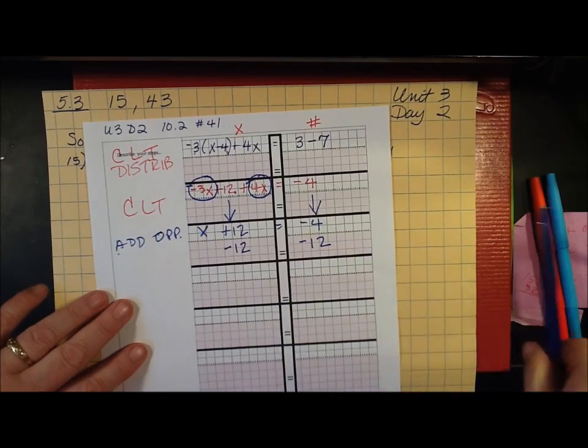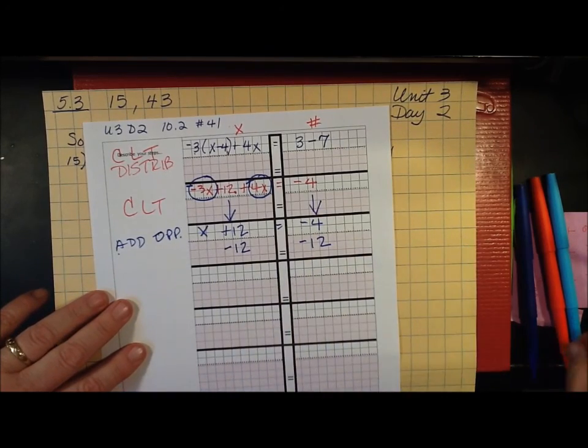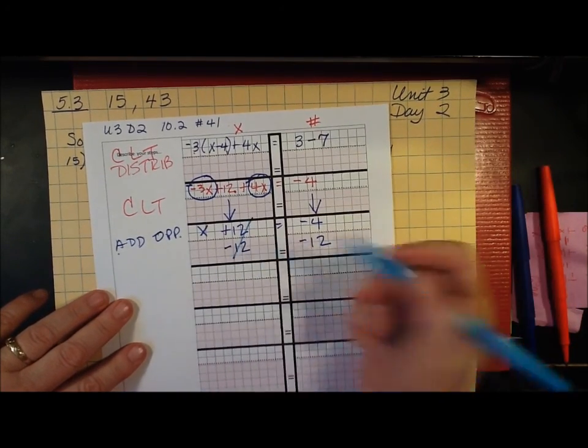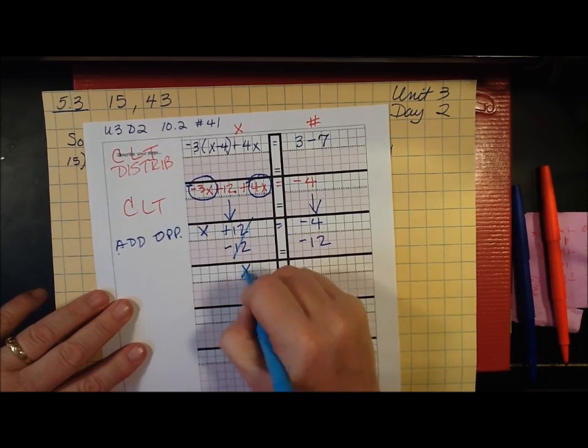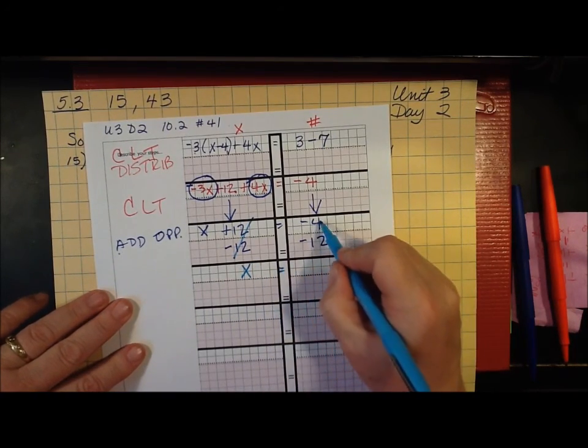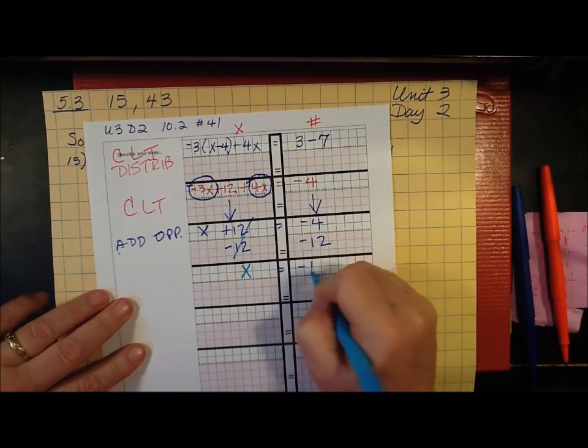And again, that's my workspace. They match. So now that's zeroed out and I have x by itself. And here I have negative 4 plus negative 12 is negative 16.